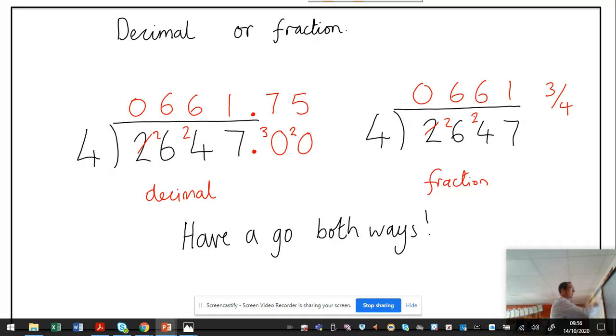Now, we know that 3 quarters is 0.75, so we know that they are both exactly the same. But did you see how it worked? I made sure that I put my decimal point in the right place after the 1s column, and I put my placeholders in the place where there was nothing.